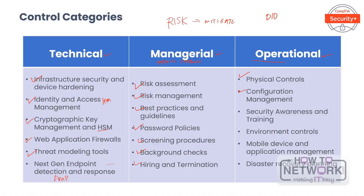Operational controls can also include a configuration management database that stores all of your configuration items (CIs). You can also conduct security awareness and training on acceptable use policies, and implement physical and environmental controls — for example, managing heat, cold, and humidity, fire detection and suppression, contingency planning, incident response, testing, and drills. This can also include system and data integrity mechanisms like mobile device and application management and disaster recovery plan testing and exercises.